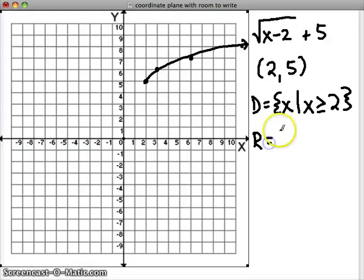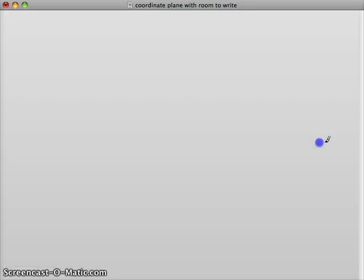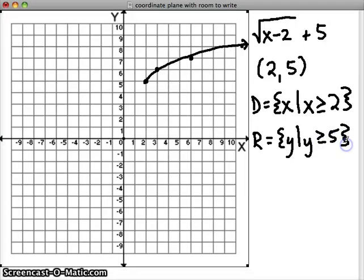My range values are everything for Y such that Y is greater than or equal to 5. So all range values are all Y values, including 5 and greater. Those are all my possible values for this graph. So again, domain and range in set-builder notation. It's really not any harder than that.